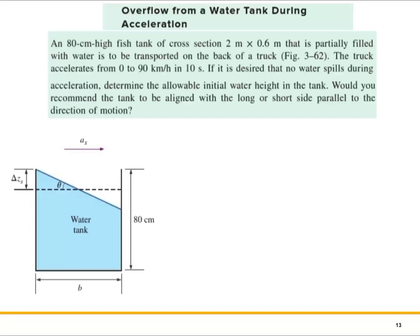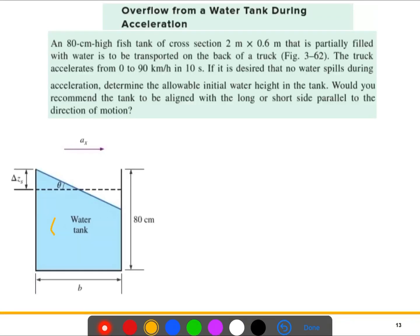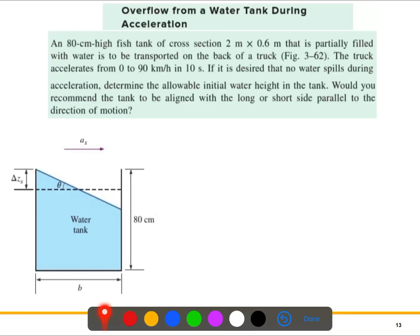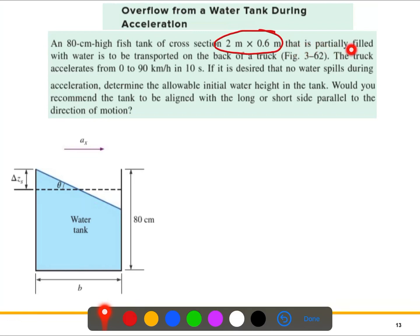This is the second problem we are going to solve today. We have a fish tank that is 80 centimeters high, with dimensions of 2 by 0.6 meters. The tank is partially filled with water and is to be transported on the back of a truck.